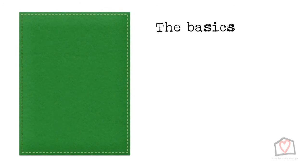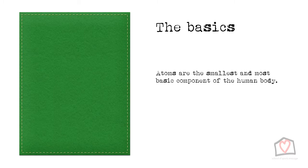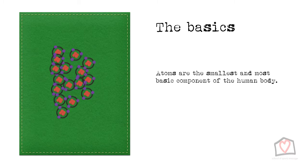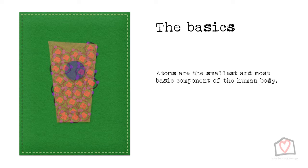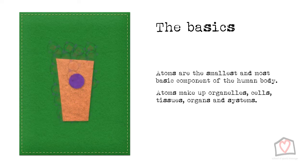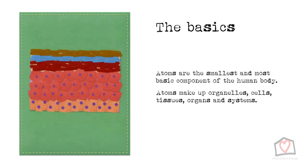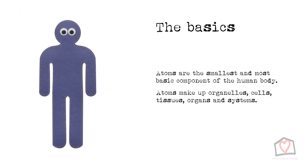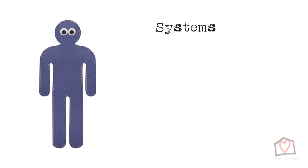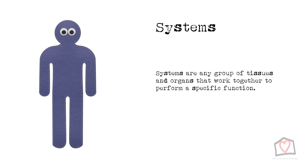To understand the body we need to understand how it is put together. Atoms are the smallest and most basic component of the human body. These atoms make up organelles, which build up to create cells. These cells further build into tissues, which make up organs, to then create entire systems. Systems are any group of tissues and organs that work together to perform a specific function.